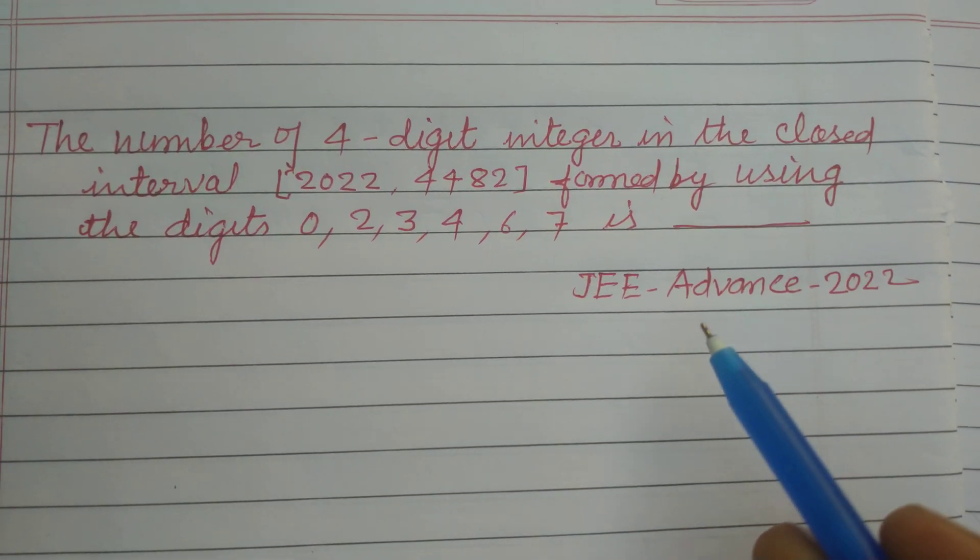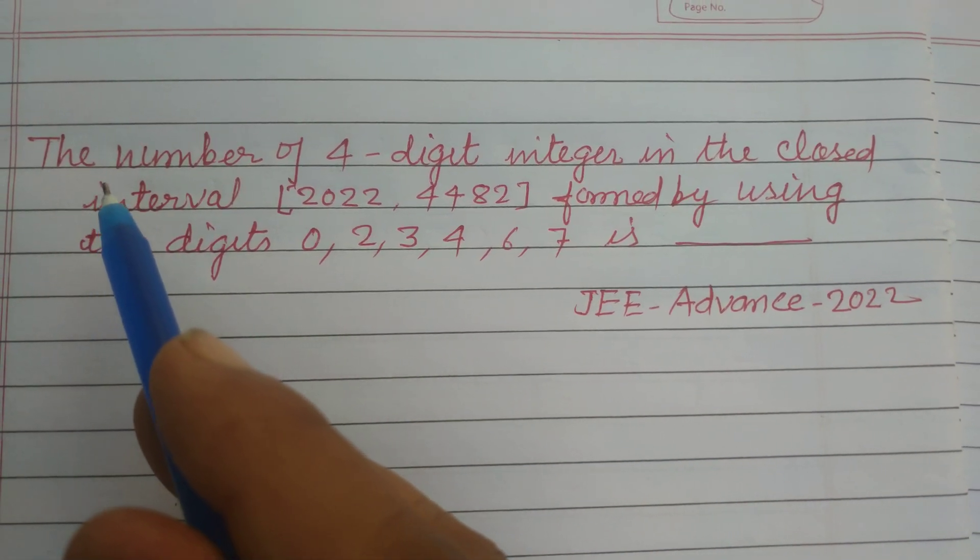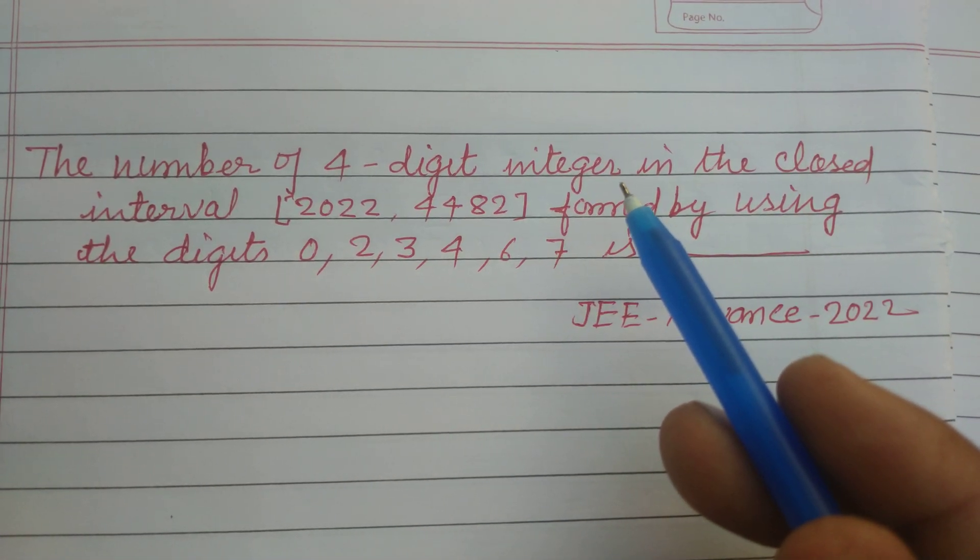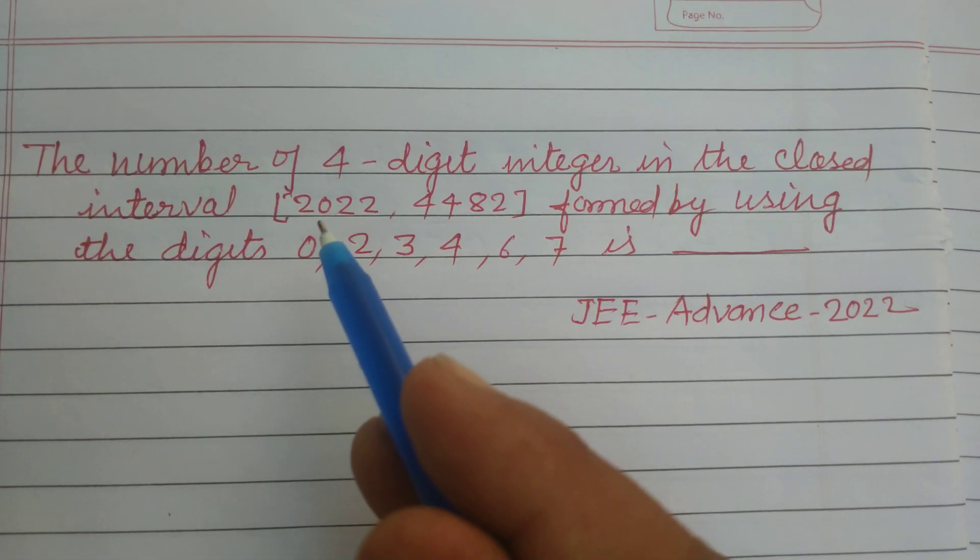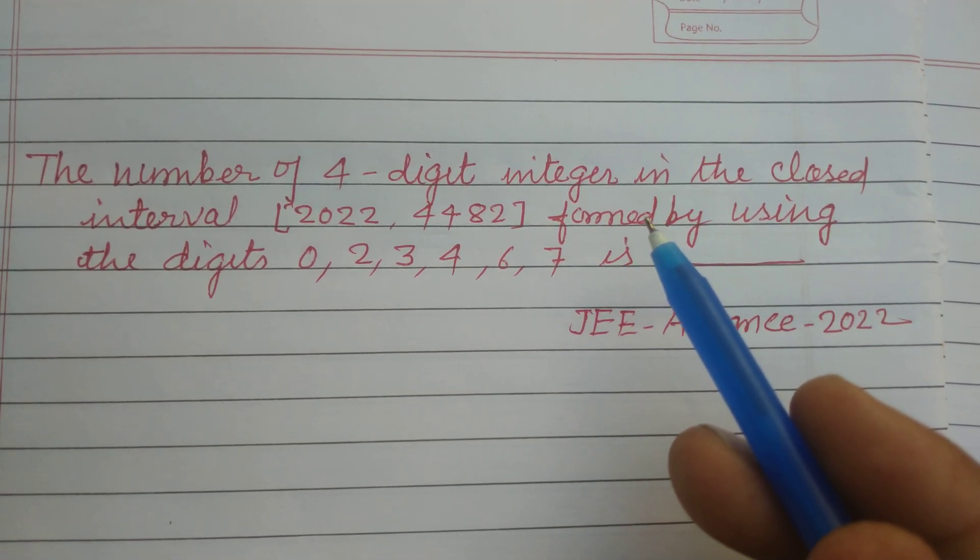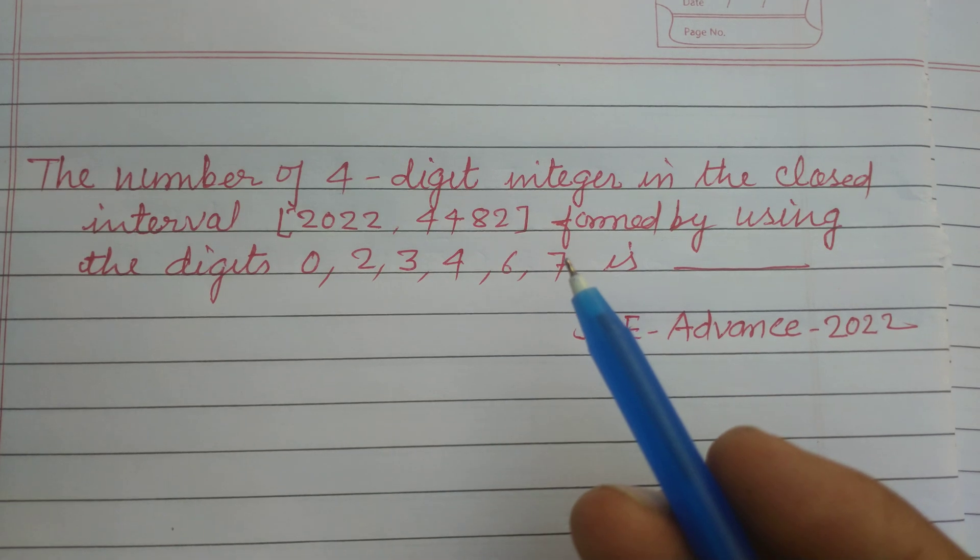Hello student. Welcome to this YouTube channel, JEE Advanced 2022. Question based on permutation and combination. The number of 4-digit integers in the closed interval 2022 to 4482,